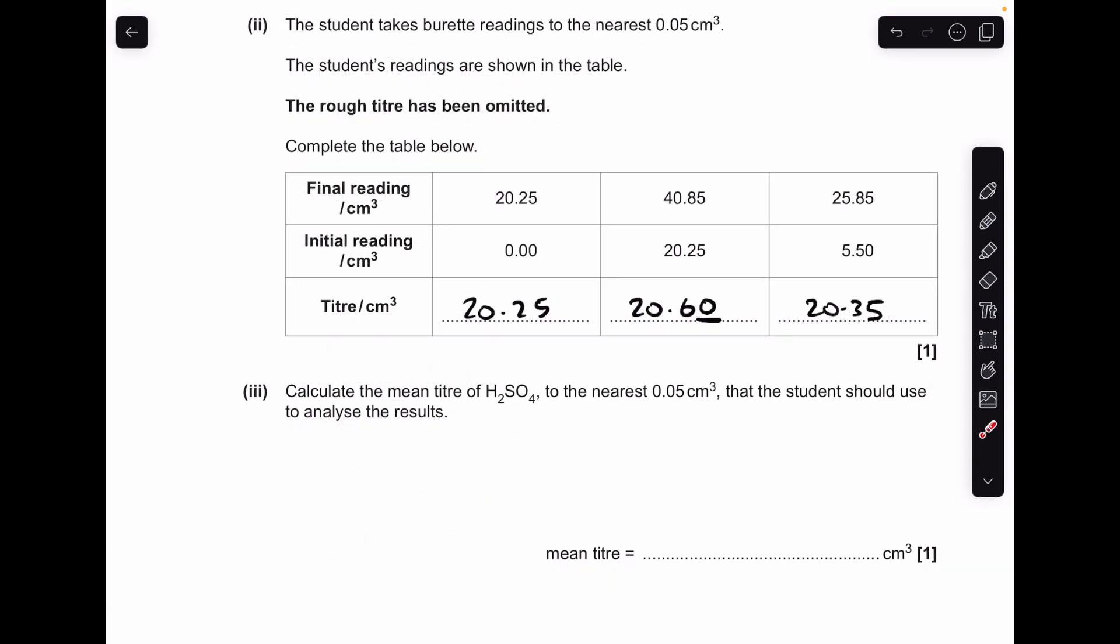Moving on to the titration results, the three titres have already been worked out there. Just be careful with that middle one—that zero must be there. I always say to my students that any titration reading or titre needs to be written up as something point something zero or something point something five.